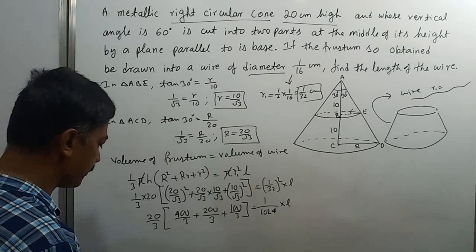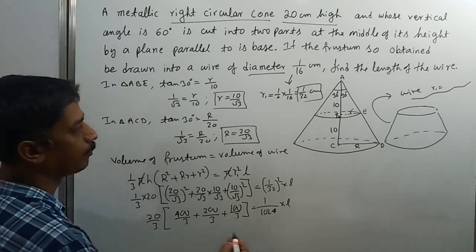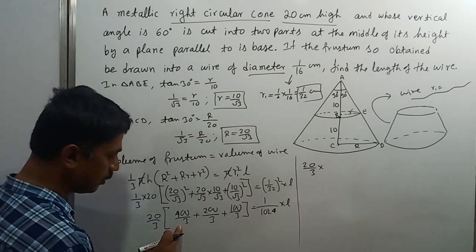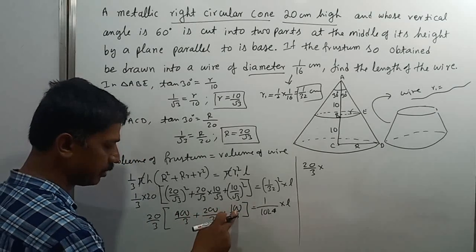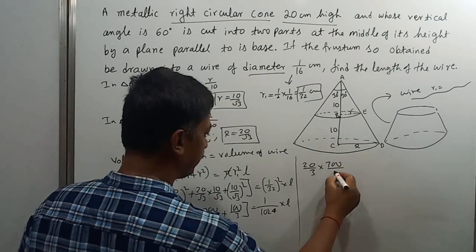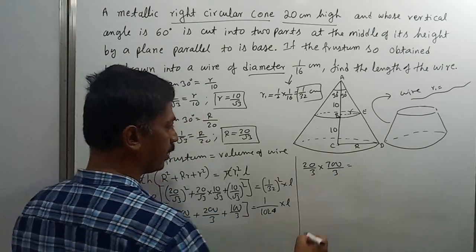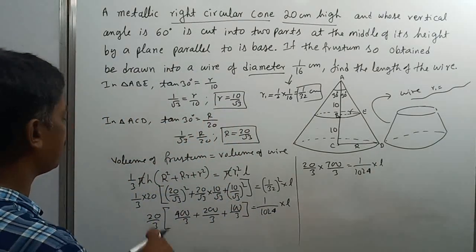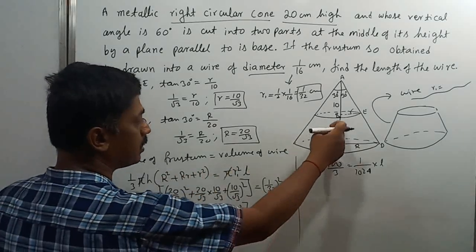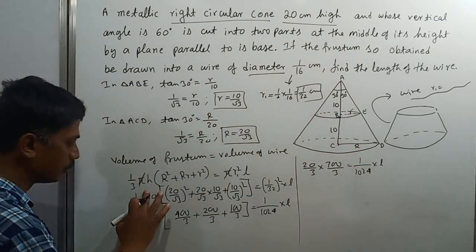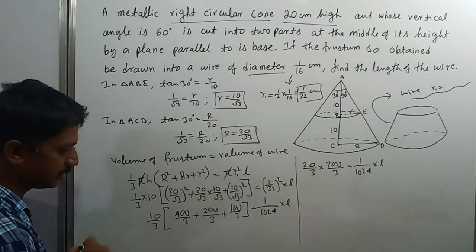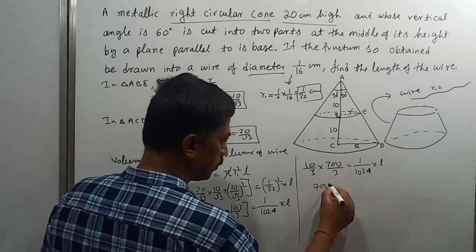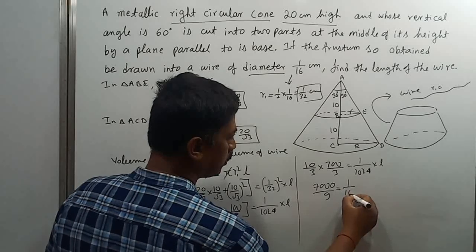Simplifying the frustum volume: (20/√3)² = 400/3, (20/√3)(10/√3) = 200/3, (10/√3)² = 100/3. The height of the frustum is 10, not 20. So the sum inside is 400/3 + 200/3 + 100/3 = 700/3, and the frustum volume becomes (1/3) × 10 × (700/3) = 7000/9. Setting equal: 7000/9 = (1/1024) × l.